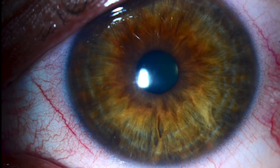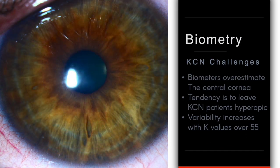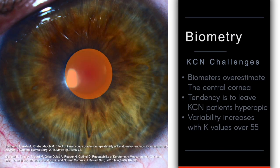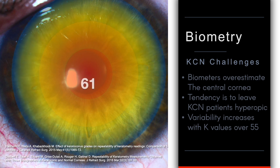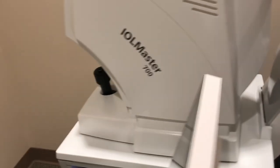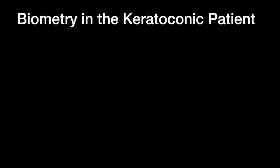Calculation of lens power is always a challenge with keratoconus, because of the irregular astigmatism. All of the biometers tend to overestimate the power of the cornea, because the central cornea is so steep and then tends to become flatter in the periphery. So we underestimate the power of the IOL, leaving our patients hyperopic. And it doesn't matter how fancy your biometer is — whether it's an IOL Master, a Pentacam AXL, or some of the other more advanced keratometers — they all mess things up.